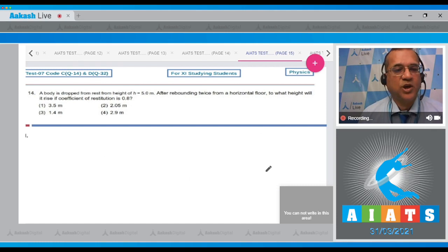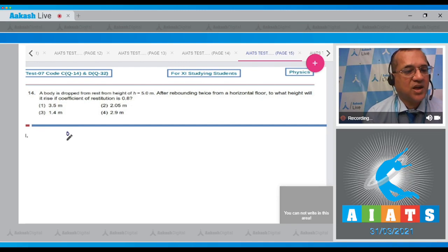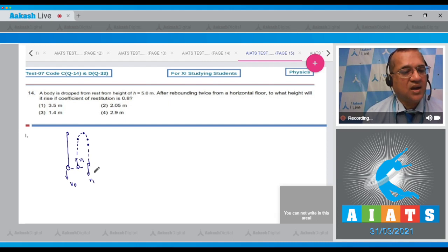Question number 14: A body is dropped from rest from height of 5 meters. After rebounding twice from a horizontal floor, to what height will it rise if the coefficient of restitution is 0.5? Now it's given that the ball is dropped from here, it will strike the ground with certain velocity v₀, loses kinetic energy and goes up with velocity v₁ as the first rebound, reaches here with velocity v₁ and rebounds with the velocity v₂.